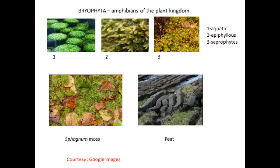Mosses play an important role in bog succession and can change the landscape from open soil to climax forest. The thick mat formed by mosses provides a suitable substratum for germination of hydrophilic seeds due to the presence of water and humus. The dead and decayed mosses and hydrophilic plants form solid soil for mesophytic development. They prevent soil erosion by reducing the impact of falling rain, reduce the amount of runoff water due to their water-holding capacity, help in recycling of nutrients, and also act as rock builders.